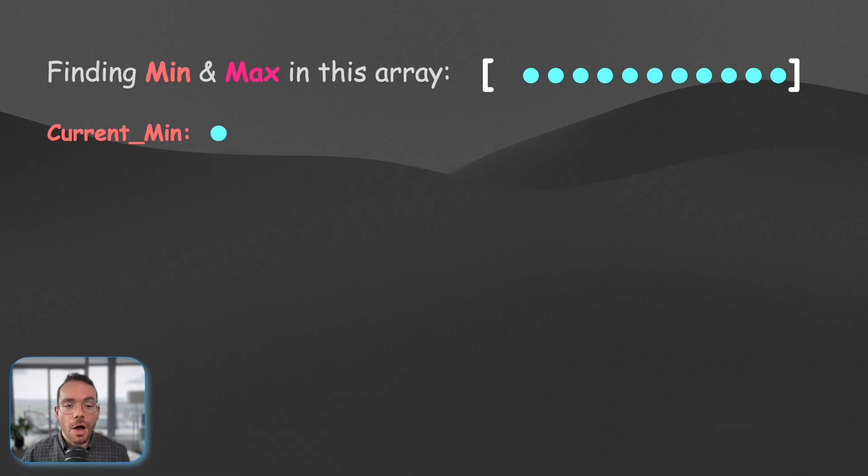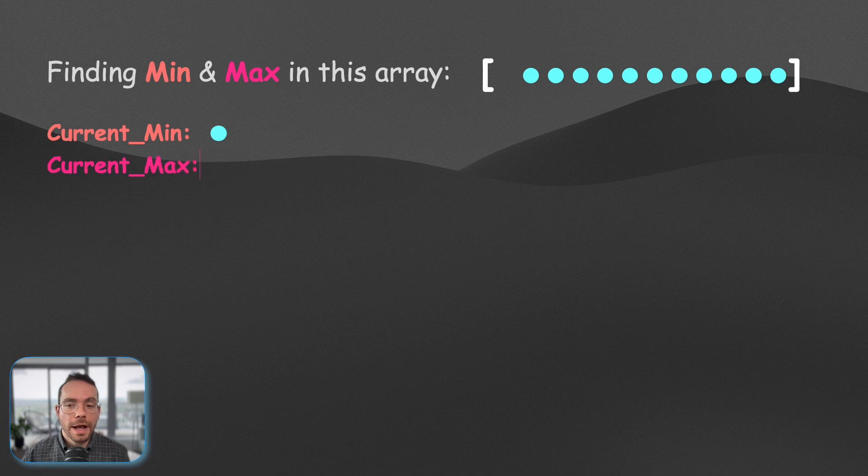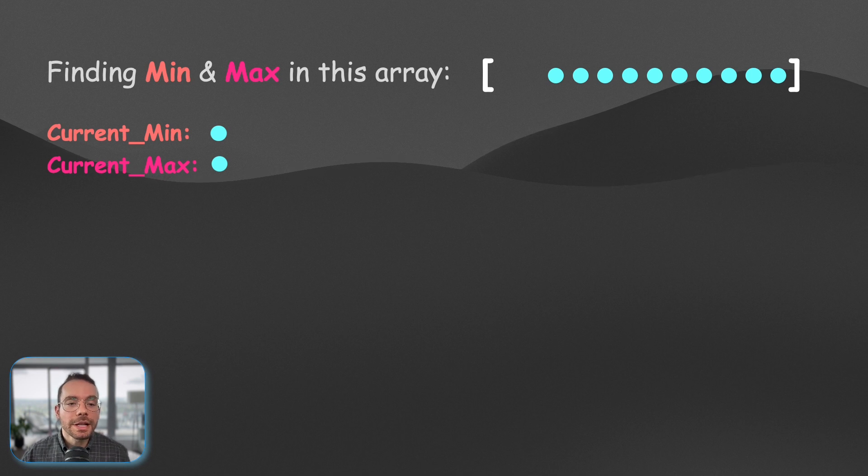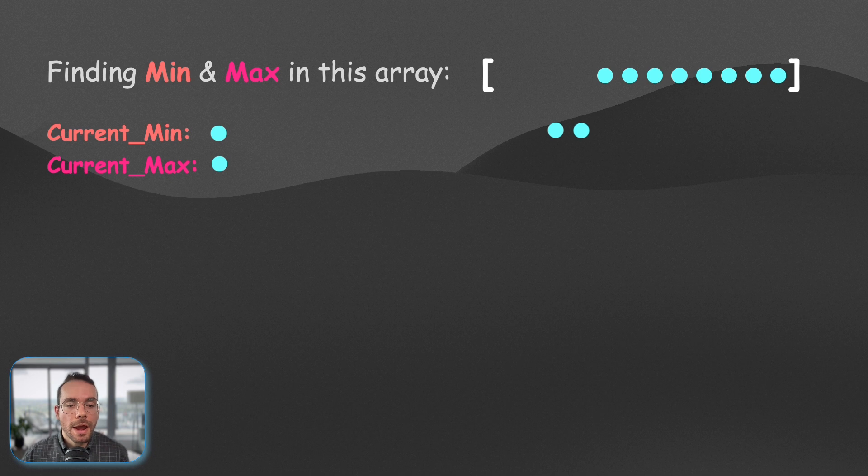So, depending on whether we have odd or even number of elements, we can find our current min and max either using the first element of the array or the first two. So, after we initialized our current min and max, then what we're going to do is we're going to take a pair at a time, and the first thing we do, we compare the elements of this pair with each other.